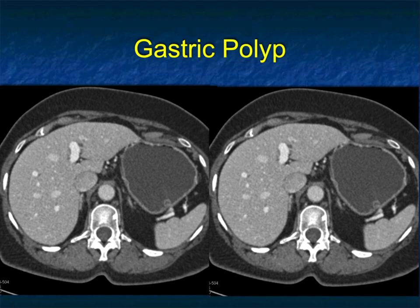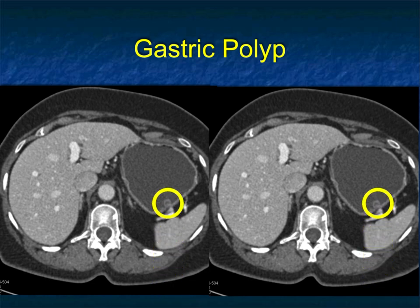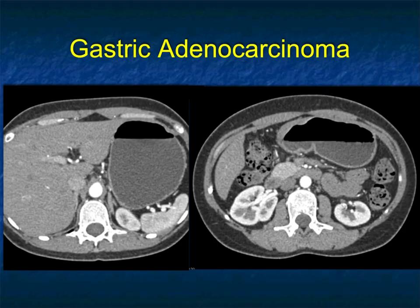Here's a very nice case. The stomach is well distended with water. The gastric wall is normal in thickness, typically under 5 millimeters. But if you look hard, there's a 5-millimeter polyp posteriorly, very nicely shown because the stomach is distended.